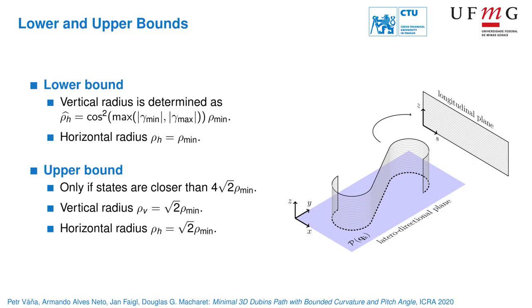Such a lower bound can be easily computed and provides quite high estimate of the real solution cost. On the other hand, the turning radii are multiplied by the square root of 2 for the upper bound and it can be applied only if the endpoints are far enough.